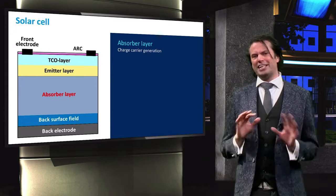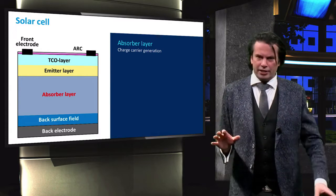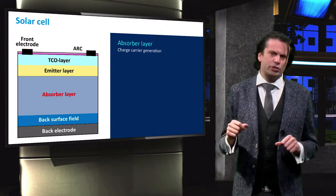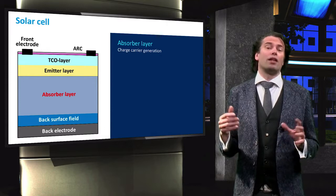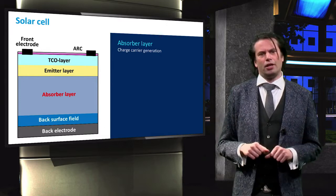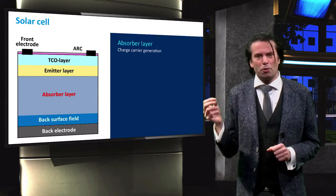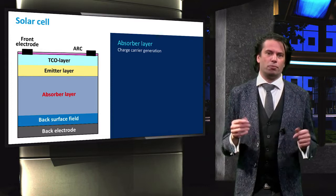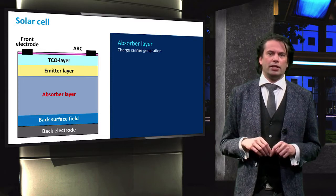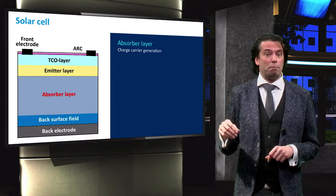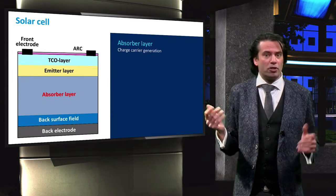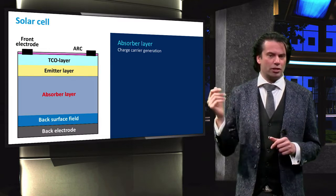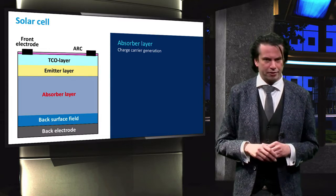The purpose of this absorber layer, as its name implies, is to absorb light. Through this absorption, minority and majority charge carriers are formed. In the case of a p-type absorber, electrons are the minority carriers and holes are the majority carriers.